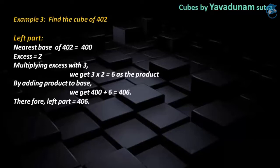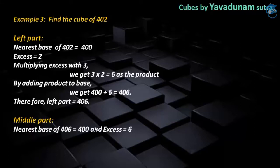After completing the process of the left part, now moving to the process of the middle part. The first step is to take the answer from the left part, which is 406. By taking 406 into consideration, we have to find the nearest base as well as the axis. The nearest base of 406 is 400 and the axis is 6, found by comparing 406 with the base 400.